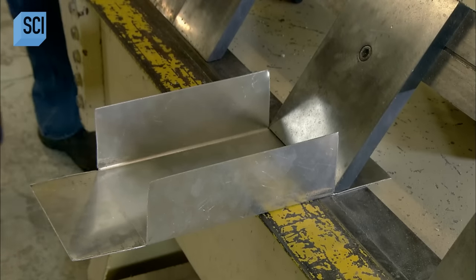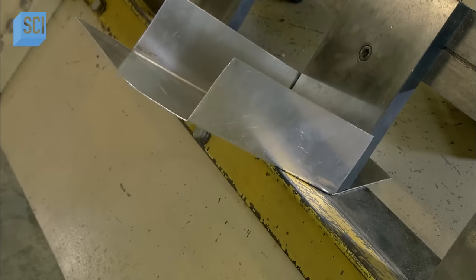He folds up the flaps using a brake press, creating a box to cover the main battery.